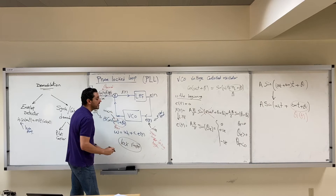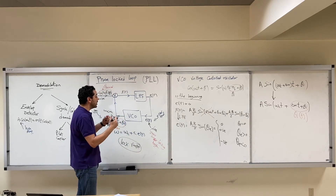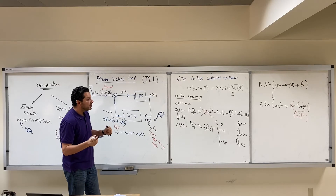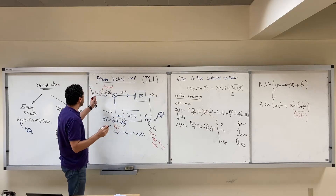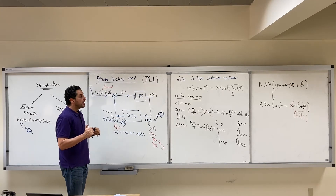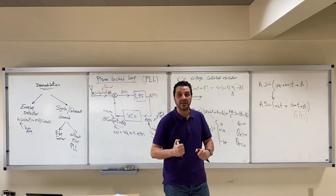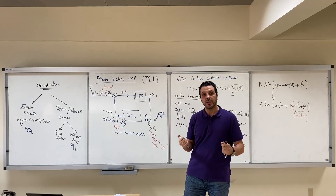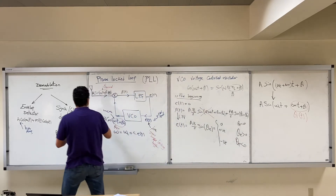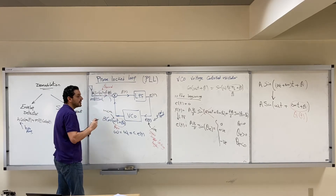So far we assumed the received signal is A·sin. But in practice, is the received signal A·sin? No. In double sideband suppressed carrier (DSB-SC), for example, we receive a signal M(t)·sin or M(t)·cos. And this is the problem, because when you receive M(t)·sin instead of A·sin, i.e., instead of a constant amplitude, the following issue arises.